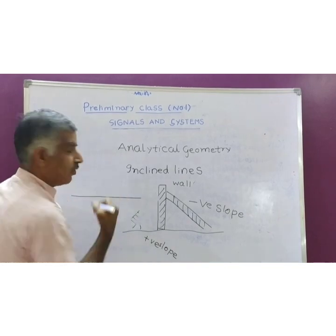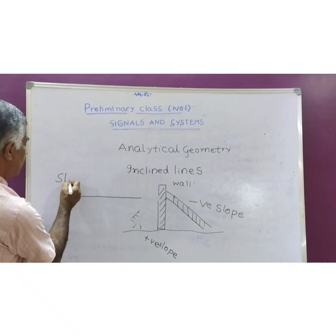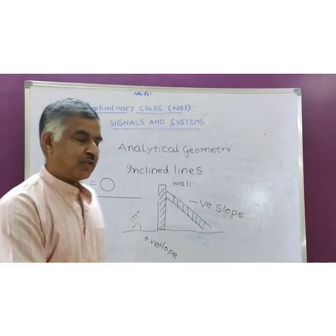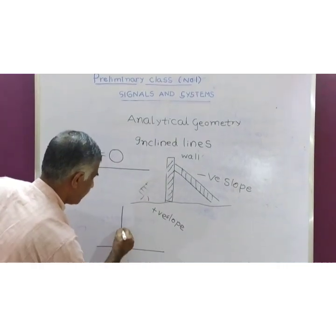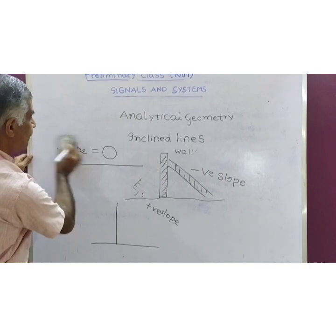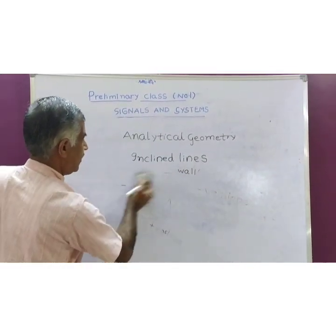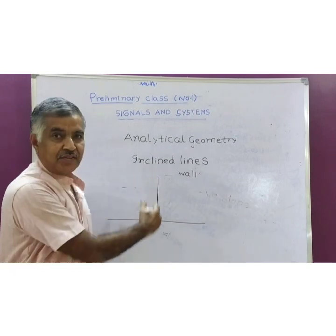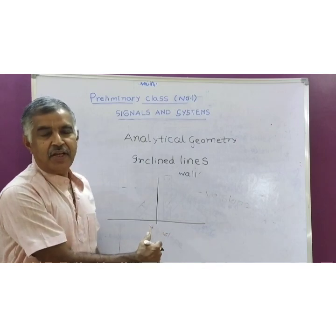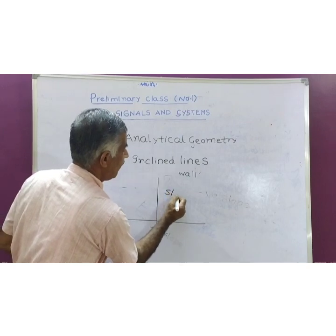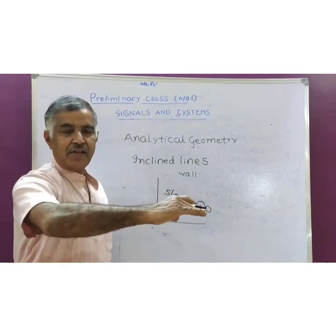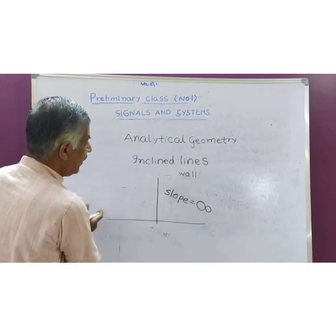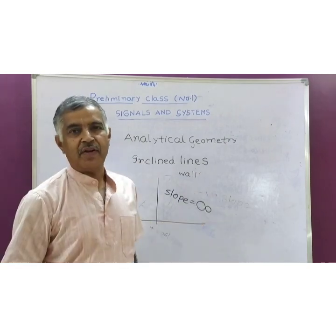For a horizontal line, what is the slope? For a horizontal line, slope is zero. If the ladder is placed vertical — that is, if a line is positioned vertically — then it is going to possess a slope of infinity. So, horizontal means slope is zero, vertical means slope is infinity, and if it is inclined, it is going to have a definite slope.